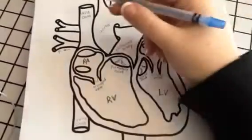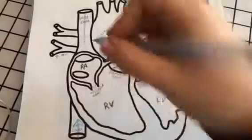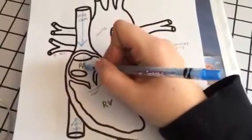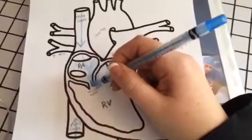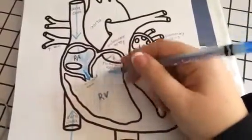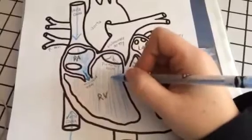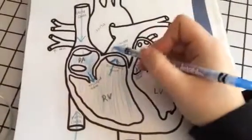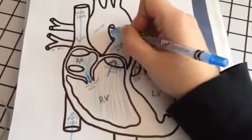Tracing blood flow on the real diagram: deoxygenated blood comes in through the vena cavas — from the top and from the bottom — into the right atrium. When that chamber fills, it presses blood down through the tricuspid valve. When the right ventricle fills, the tricuspid valve closes, the pulmonary valve opens, and blood flows through into the pulmonary artery out to the lungs.